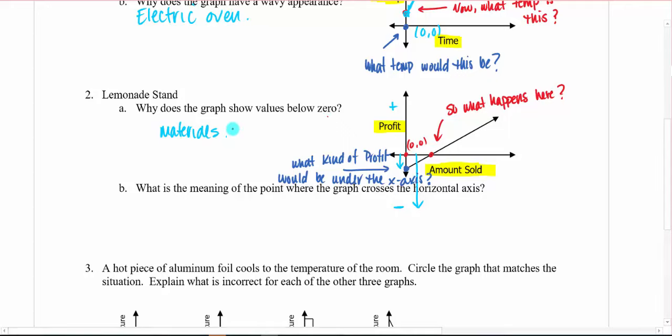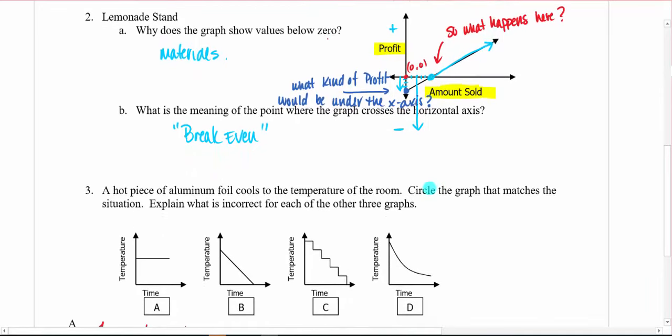So this one has a lemonade stand. Notice our two axes on this one. We have profit for our dependent variable, that's the one that's going to change or that we're going to look at. And amount sold is the independent variable. If these terms are new to you, don't worry, we'll get into them really soon. So amount sold is what's going to kind of control what's going on. How much lemonade you sell is going to determine how much profit you get. So now we have to ask ourselves then, why is this graph beginning below the actual point of here? Because we realize that this should be zero, zero, right? Zero profit, zero amount sold. Is that really where you would start a lemonade stand?